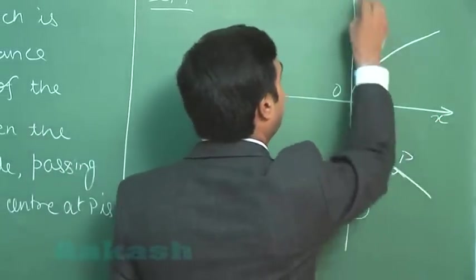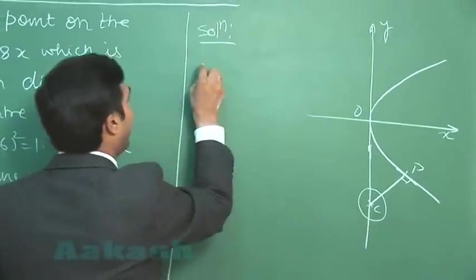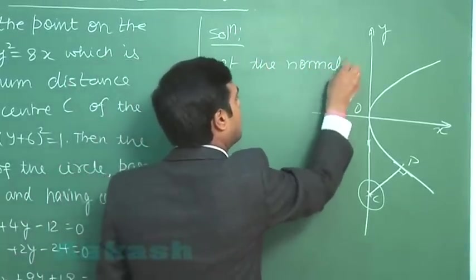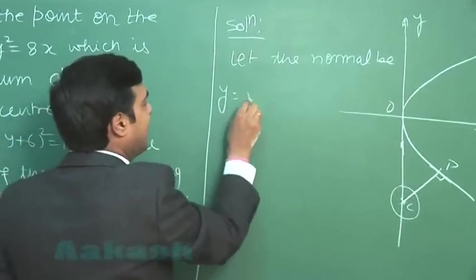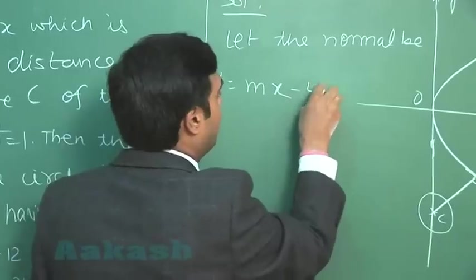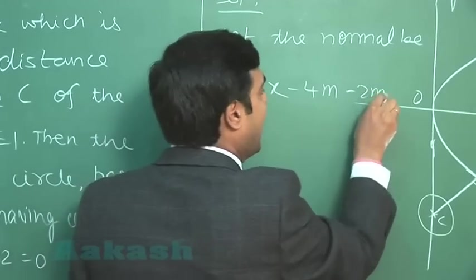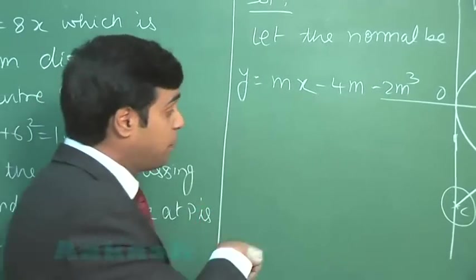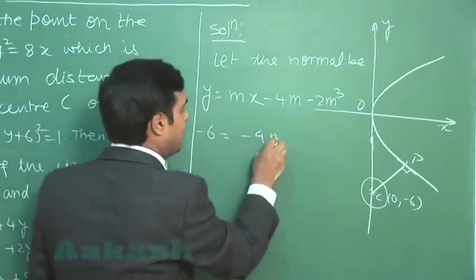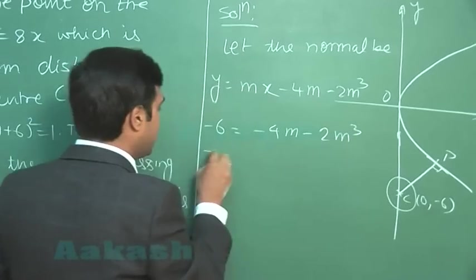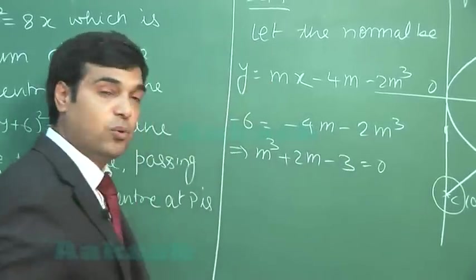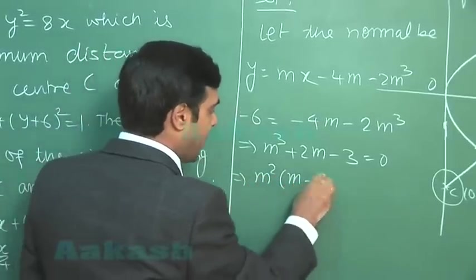So based on this concept we can simply get the solution for this question. Starting as, let the normal be y equals mx minus 2am where a is 2, so it is 4m minus 2m cube, right? It passes through the center which is (0, -6). Passing it through the point, we get equation as m cube plus 2m minus 3 equals 0.